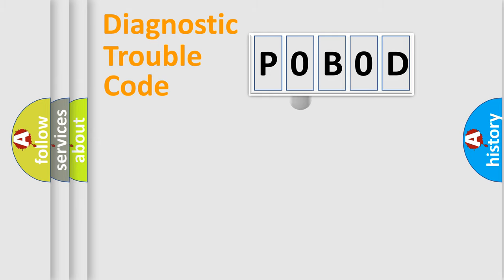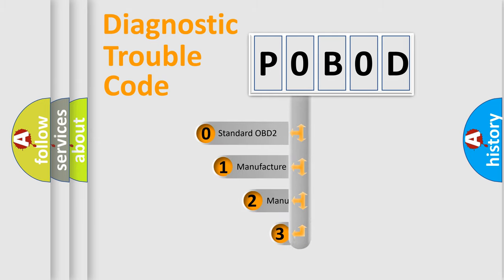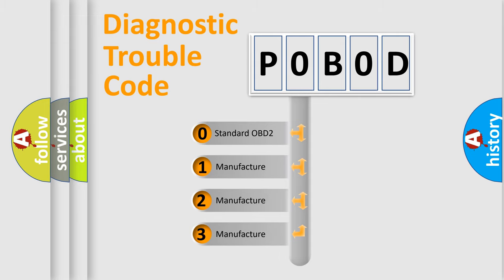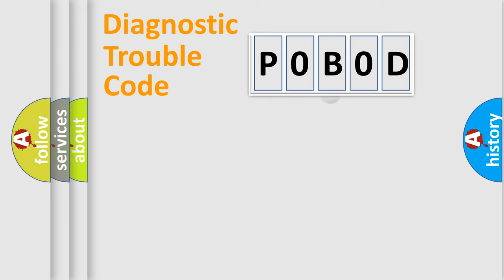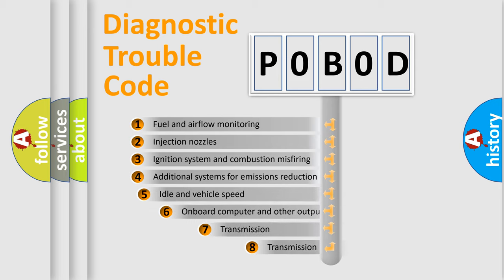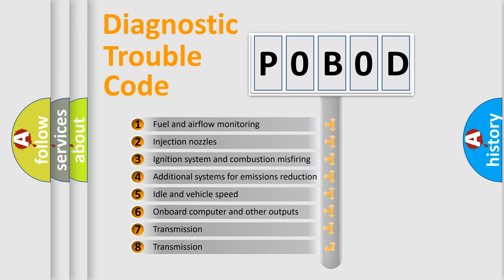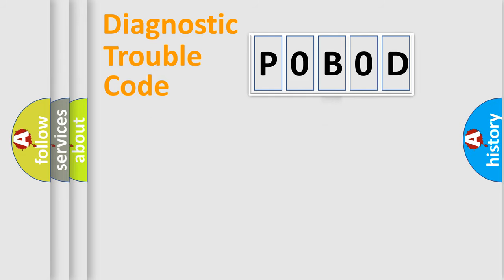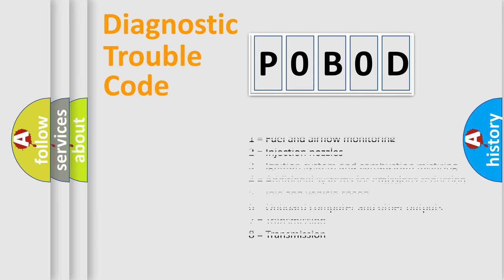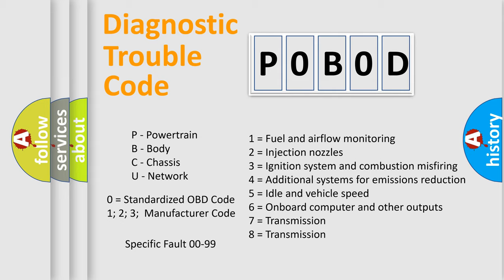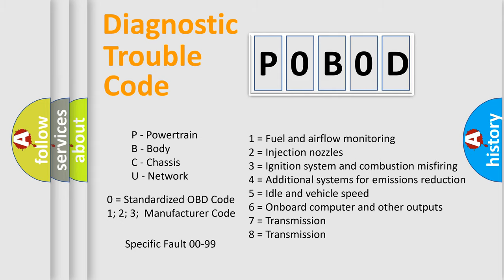This distribution is defined in the first character of the code. If the second character is expressed as zero, it is a standardized error. In the case of numbers 1, 2, or 3, it is a manufacturer-specific error expression. The third character specifies a subset of errors, and this distribution is valid only for the standardized DTC code. Only the last two characters define the specific fault of the group. This division is valid only when the second character code is expressed by the number zero.